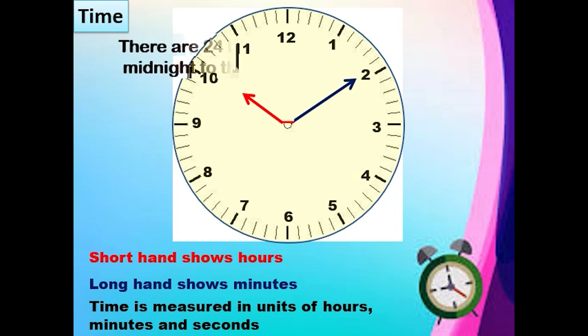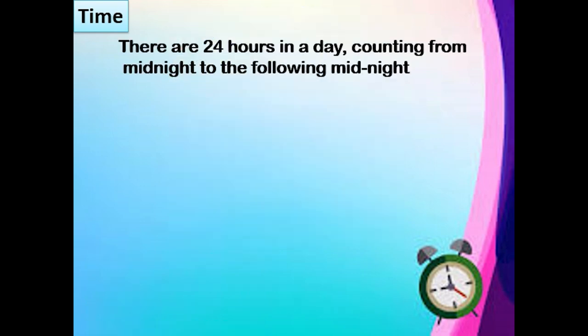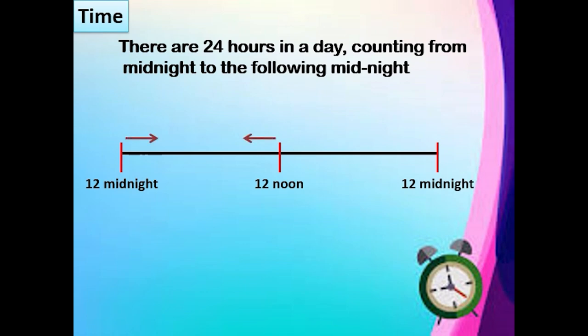There are 24 hours in a day counting from midnight to the following midnight. Let us see how. 24 hours divided into two halves. That is 12 midnight, 12 noon and 12 midnight. Here you can see from 12 midnight to 12 noon is 12 hours. 12 noon to 12 midnight it is 12 hours. That is 12 plus 12 is 24 hours.